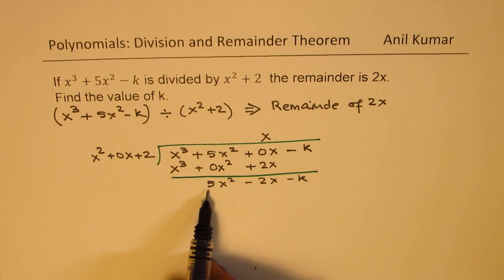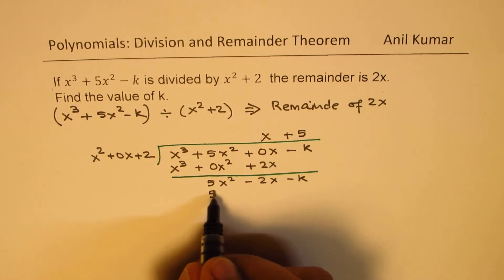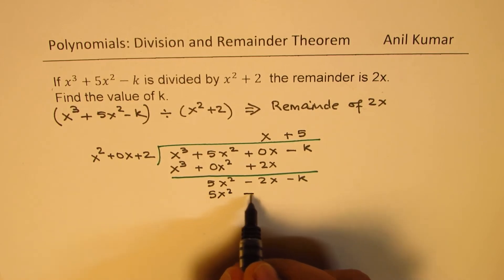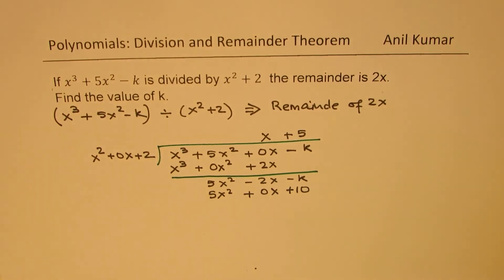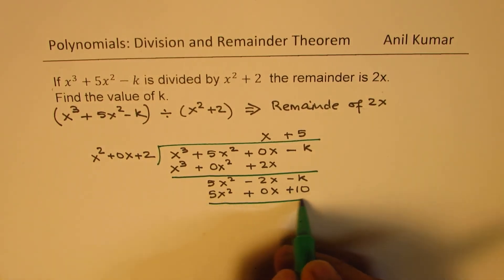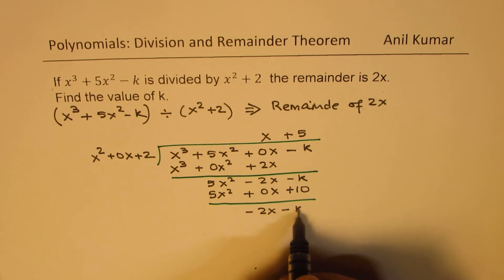Now, we have to multiply by 5, so we get plus 5 here. So we get 5x squared plus 0x plus 10. Now, when you take away, you get your remainder, which is minus 2x minus k minus 10. Now, that is the remainder.